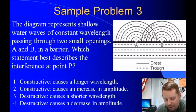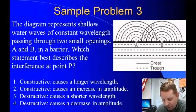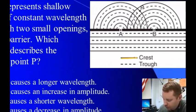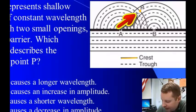Here we have a more complicated diagram showing shallow water waves of constant wavelength passing through two small openings, A and B, in a barrier. Which statement best describes the interference at point P? Well, we first have to note that crests are shown with a straight line, a complete line, troughs with this dashed line. So at point P here, I can see I have a crest and a trough meeting.